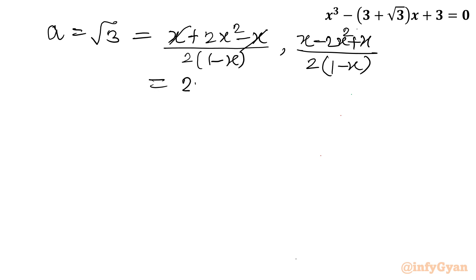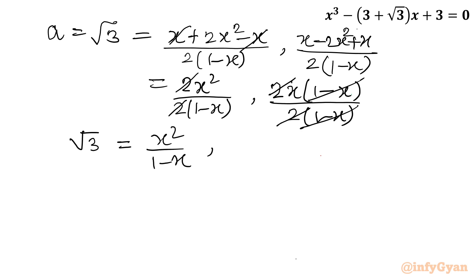Here I will cancel x and x. So what is left? 2x² / 2(1-x). And in the second solution, I will be having 2x(1-x) / 2(1-x). Now see what we can cancel. We can cancel 2, and 1-x. So what is left ultimately? √3 = x²/(1-x) and x. Now you can write x = √3. First root of the cubic equation.